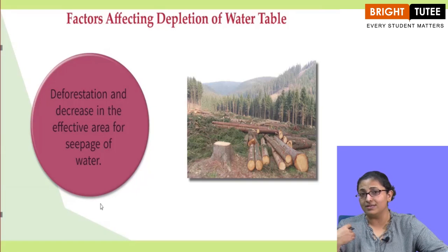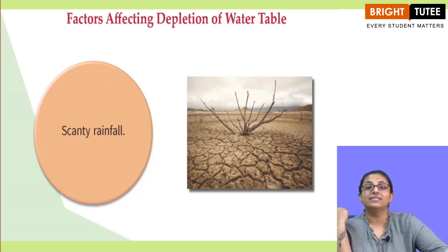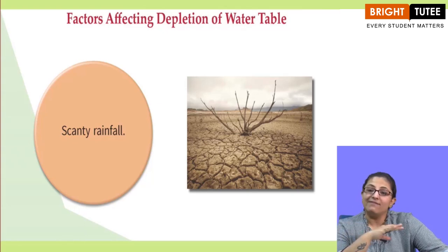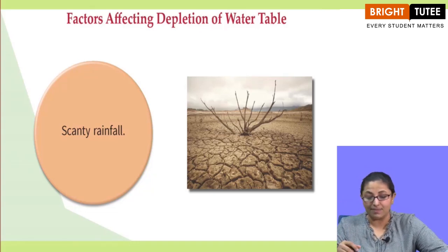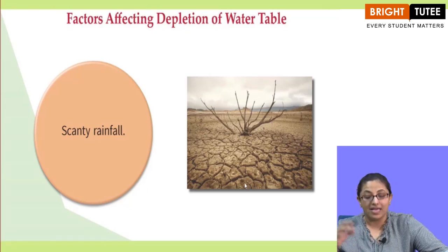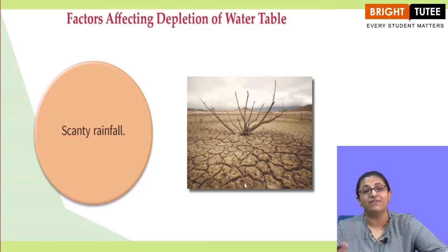Scanty rainfall is also a big factor. When there is less rainfall or no rainfall it results in drought and the water table becomes very low, especially in desert areas. You can see in the picture how cracks appear on the land surface when there is no water.